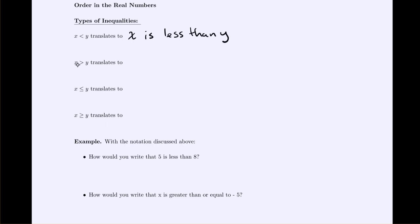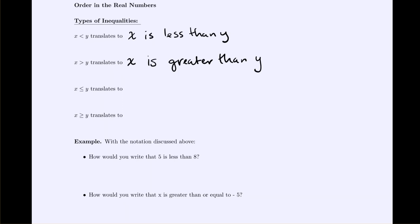In our next inequality, the point is pointing toward y, so y is the smaller number. We phrase that as 'x is greater than y,' or in its alternate form, 'y is less than x.' Both are just different ways to state the same idea.